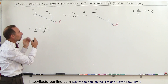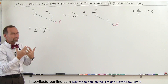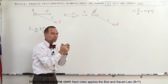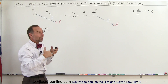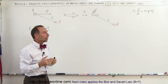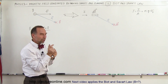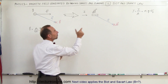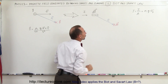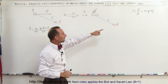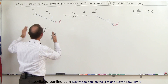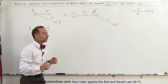Biot and Savart took that concept and wondered if they could expand that equation to a current segment. They wanted to figure out the magnetic field caused by a current in a wire — specifically, what if we have an infinitesimally small little segment called DL that carries a current I? Can we find the magnetic field at a location in the very same way?